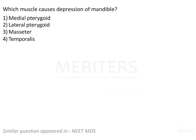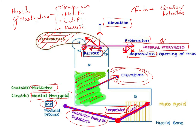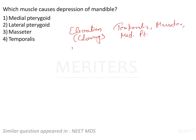Let me give you a table to remember the various movements of the mandible. First is elevation, which means closing of the mouth. The muscles that elevate the mandible are: temporalis, masseter on the outer side of the ramus, and medial pterygoid on the inner side. So elevation is due to masseter and medial pterygoid, as well as temporalis.